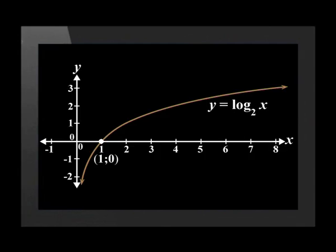As we can see, this function is also increasing. It has an asymptote of x = 0 and an x-intercept of (1, 0).